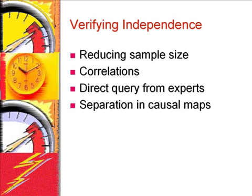There are several ways to verify conditional independence. These include: one, reducing sample size; two, correlations; three, direct query from experts; and four, separation in causal maps.